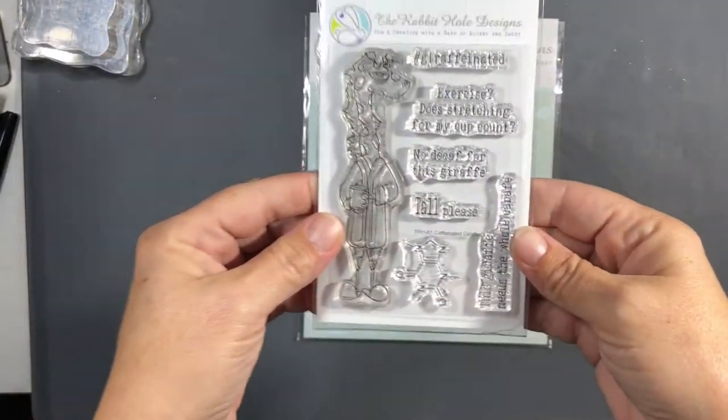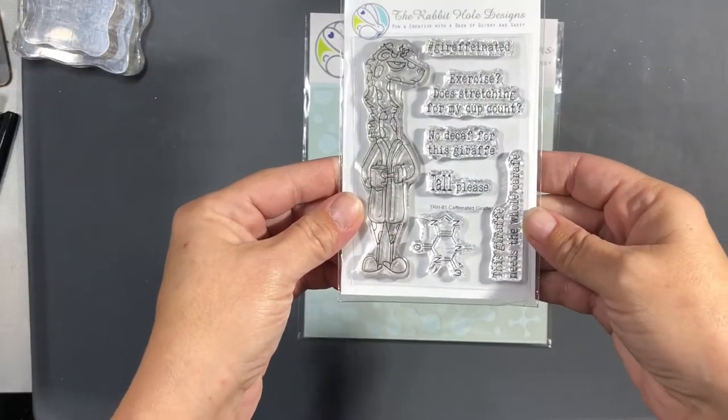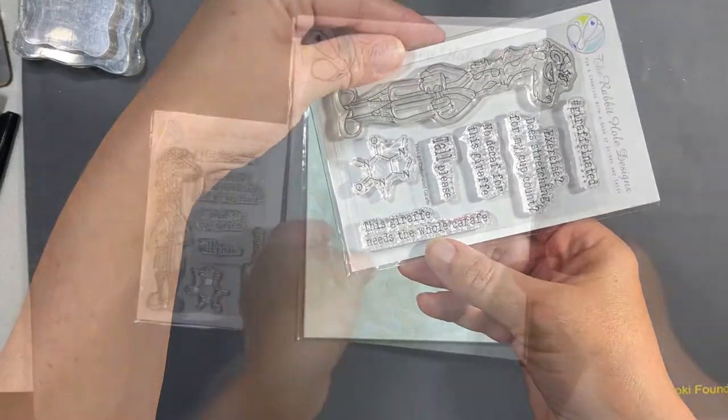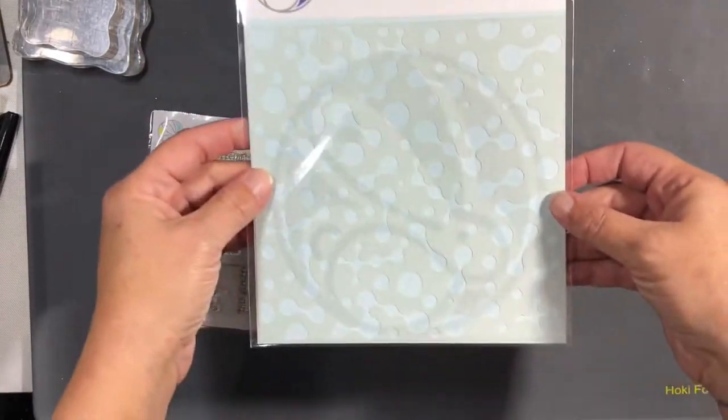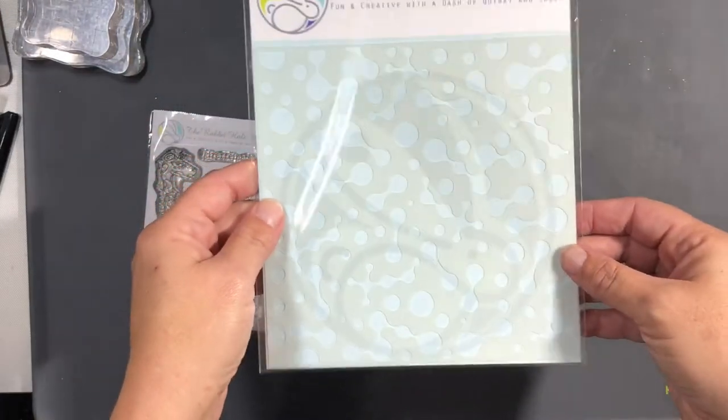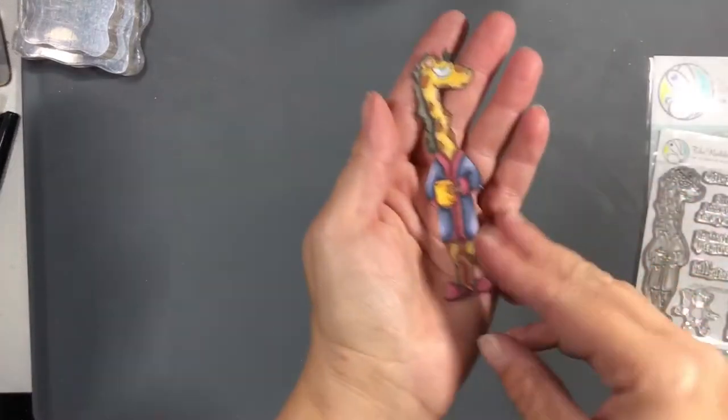Hello everyone, it's Tan and welcome back to the channel and another video for Rabbit Hole Designs. Today we're working with Caffeinated Giraffe and the Weird Science stencil from the latest release, and we're gonna make two cards.